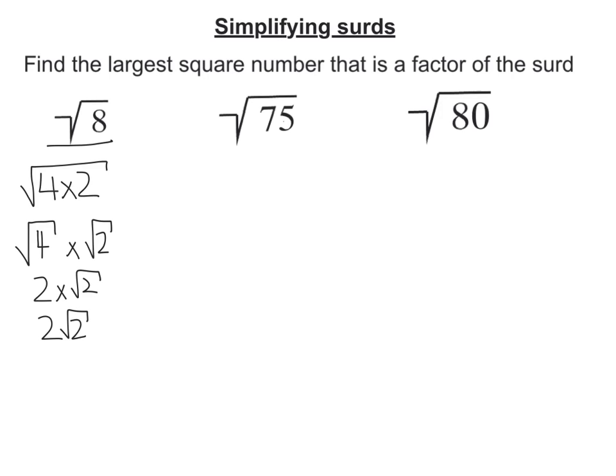Let's look at the second one, root 75. Well the biggest number that goes into 75 that's a square number is 25. So write that on the left. Always write your square number on the left. 25 times 3 is 75. Now split my square root into 2. So root 25 times root 3. And root 25 we know is 5. So it's 5 times root 3, or 5 root 3.